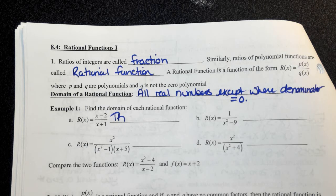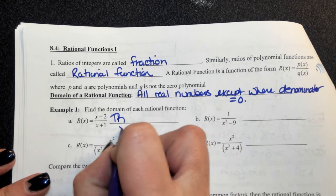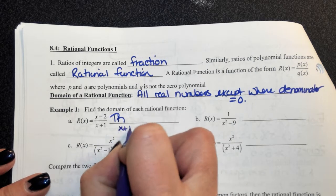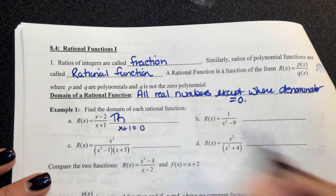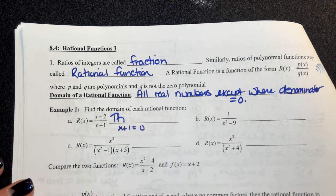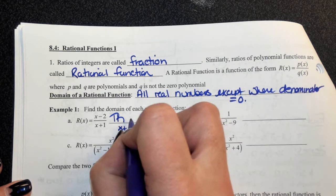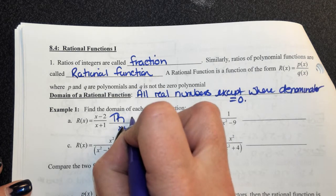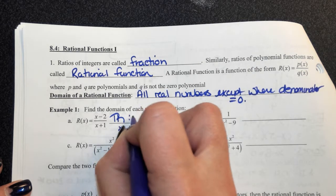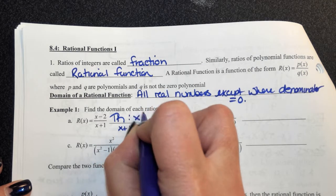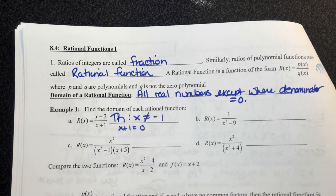The denominator is equal to zero. So where is this denominator equal to zero? If I take x plus one and set it equal to zero, what value for x will give you zero in the denominator? Negative one. So I know the domain is going to be all real numbers such that x cannot be equal to negative one.